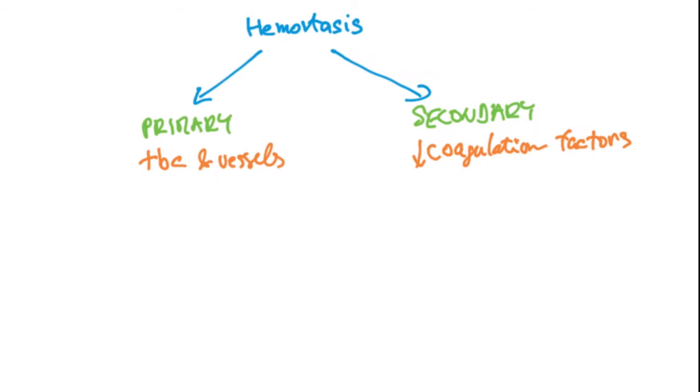The typical sign that you will see is superficial bleeding. Superficial bleeding means you're going to see petechias, either on skin or on mucous membranes. In contrast to this, with secondary hemostasis problems...